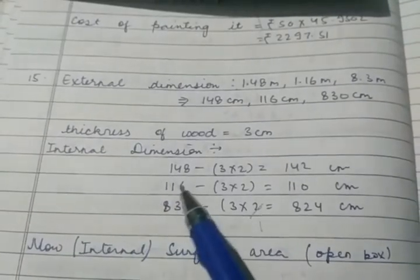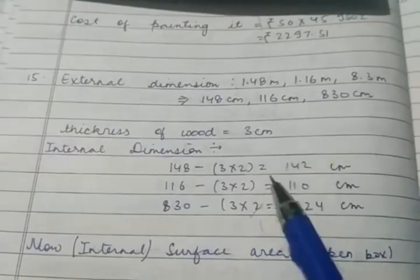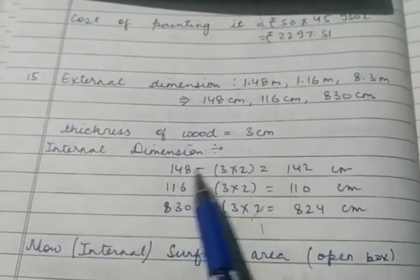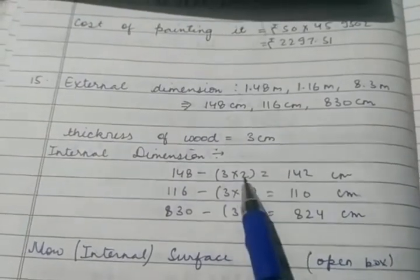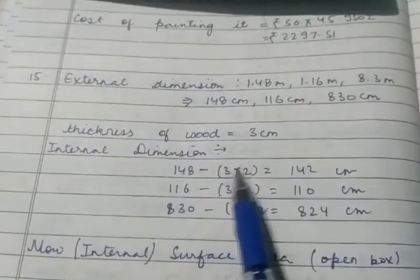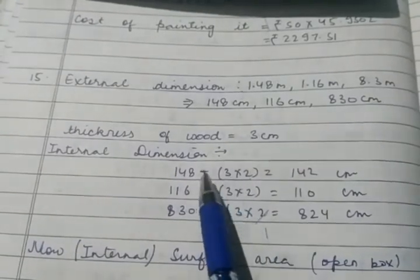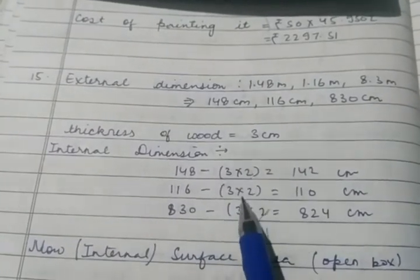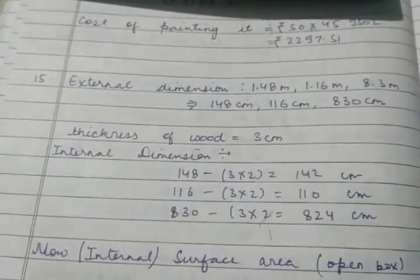External dimension, we have changed the unit to meters. Thickness is 3 cm. So when you find the internal dimension, then you have to minus the thickness times 2. So you have to minus 148 minus 3 × 2, that comes out to be 142. This thickness is 3 and why times 2? Because it will be less on 2 sides.